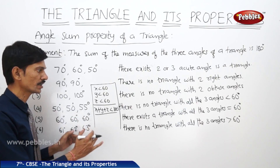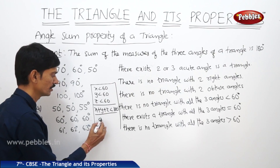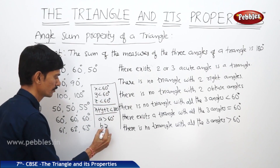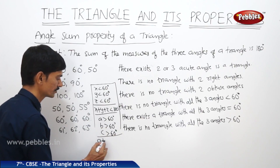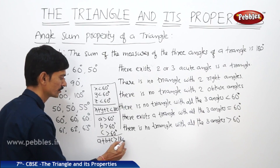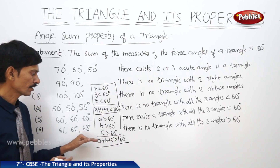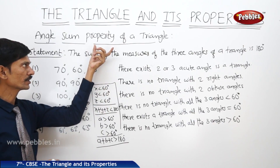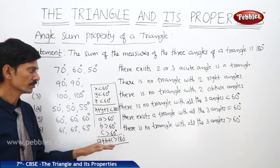Now if all three angles are more than 60 degrees, and the three angles are represented by A, B, and C, then if A is greater than 60, B is greater than 60, and C is also greater than 60 degrees, then A plus B plus C is also greater than 60 plus 60 plus 60, which is 180 degrees. But the sum of the three angles being greater than 180 degrees is a contradiction to the angle sum property of a triangle, which tells us that the sum of the three angles of a triangle is equal to 180 degrees.